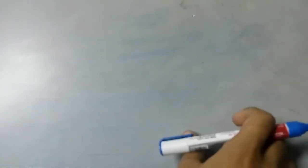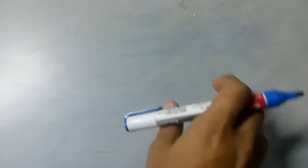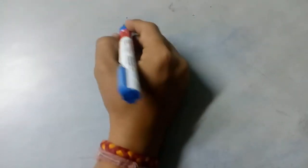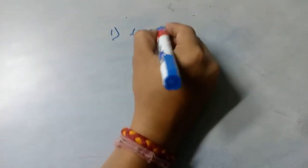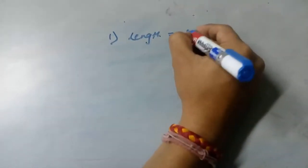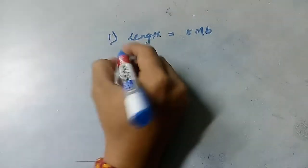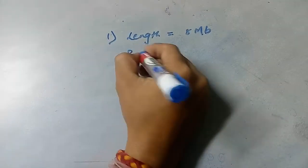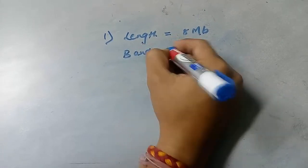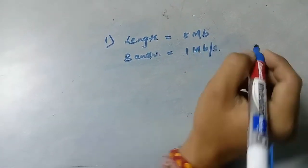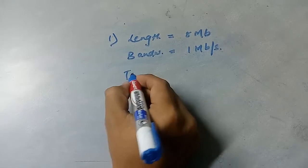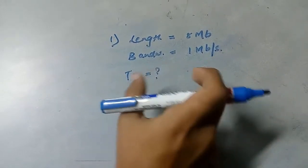The previous tutorial was about delays in computer networks. Now we'll learn different examples of delays in computer networks. Let's take one example where the length of the packet is 8 MB and the bandwidth is 1 MB per second, and we need to find the transmission delay.